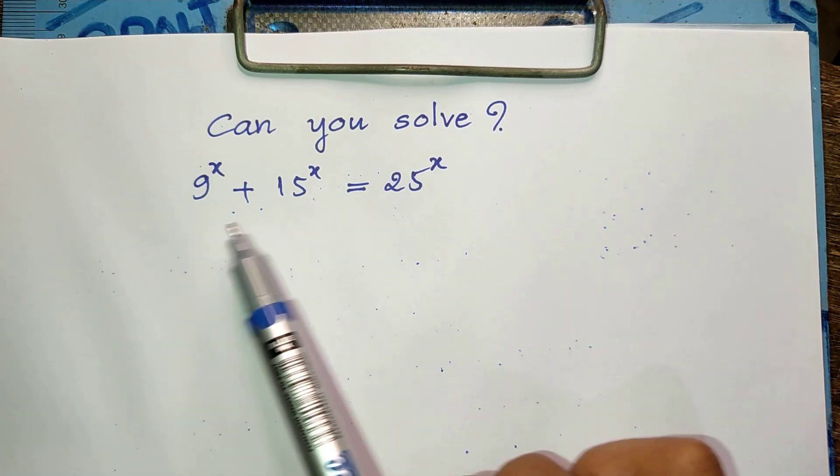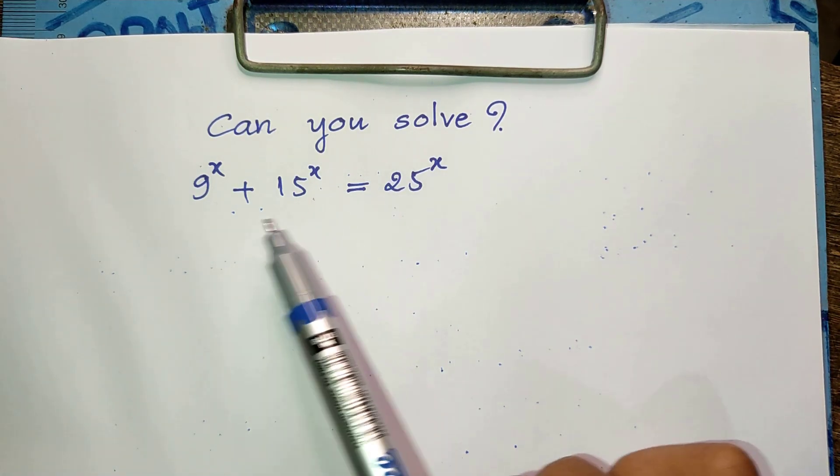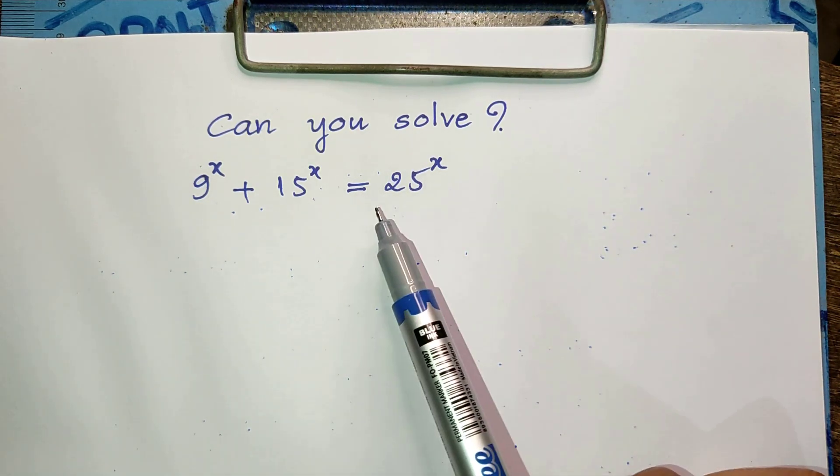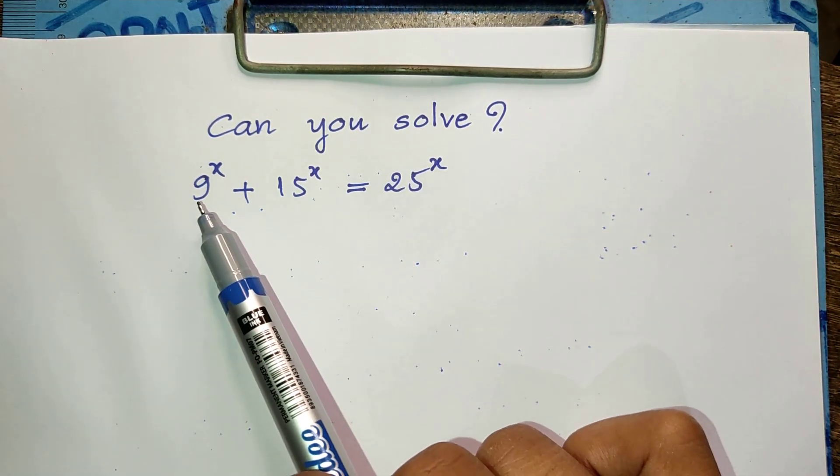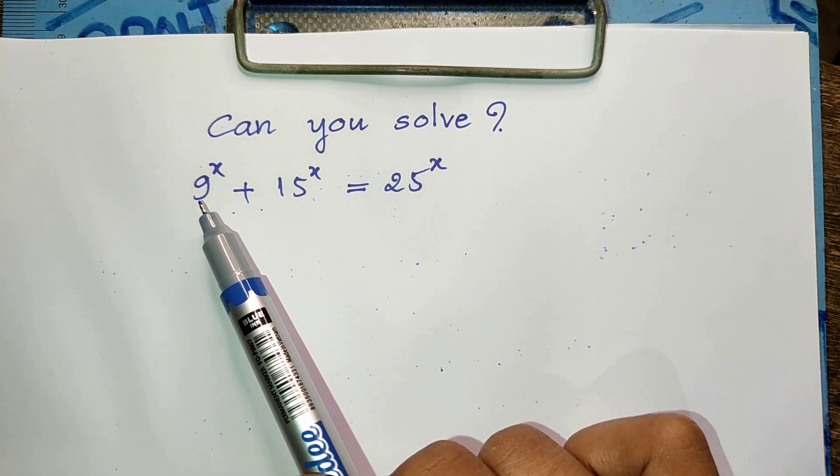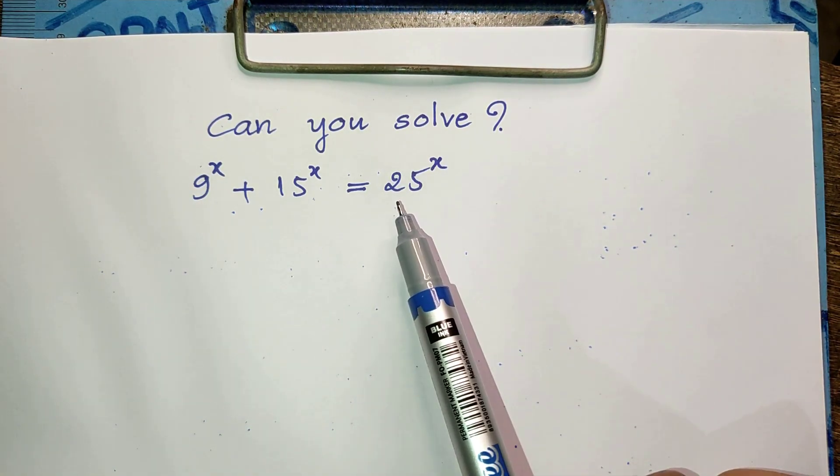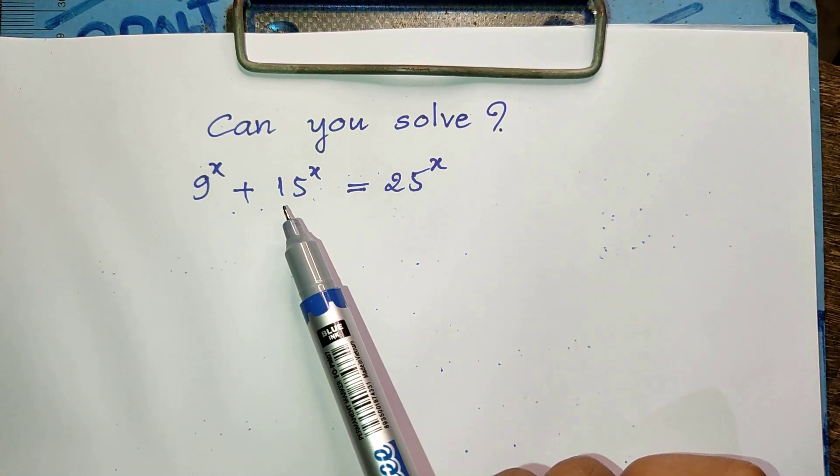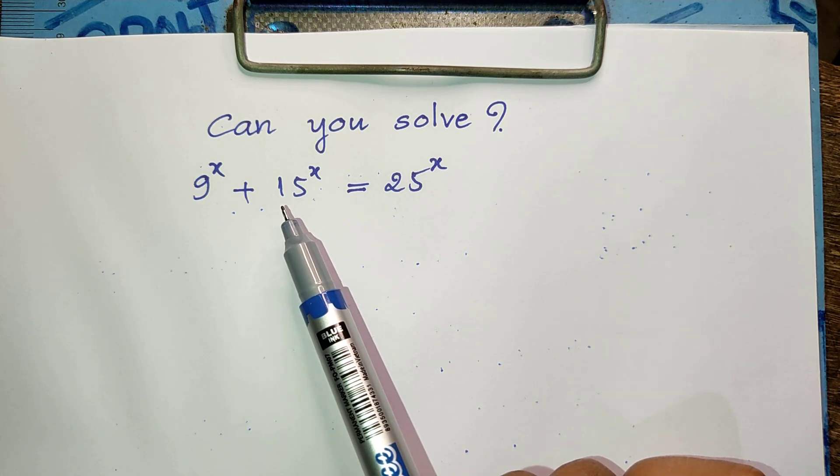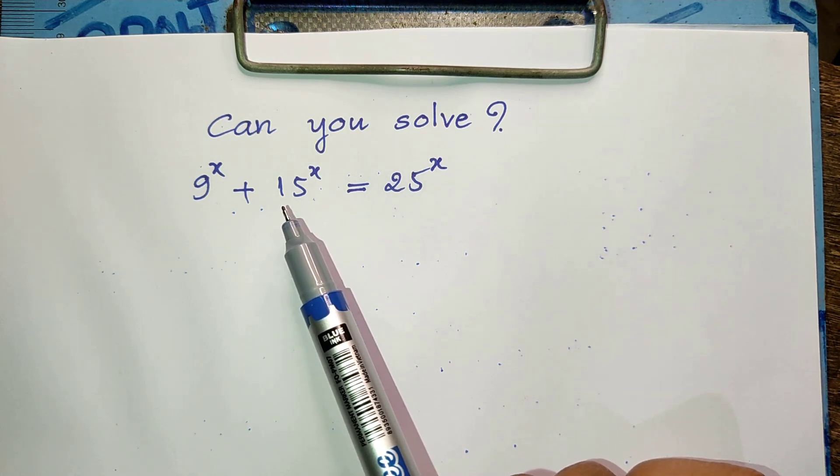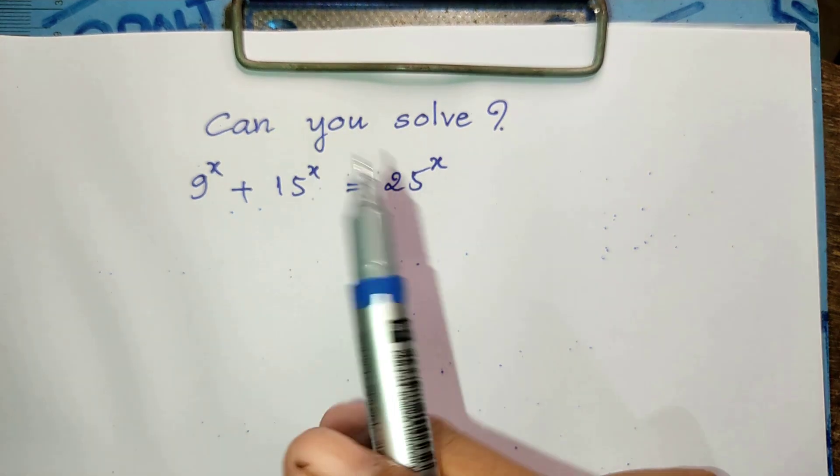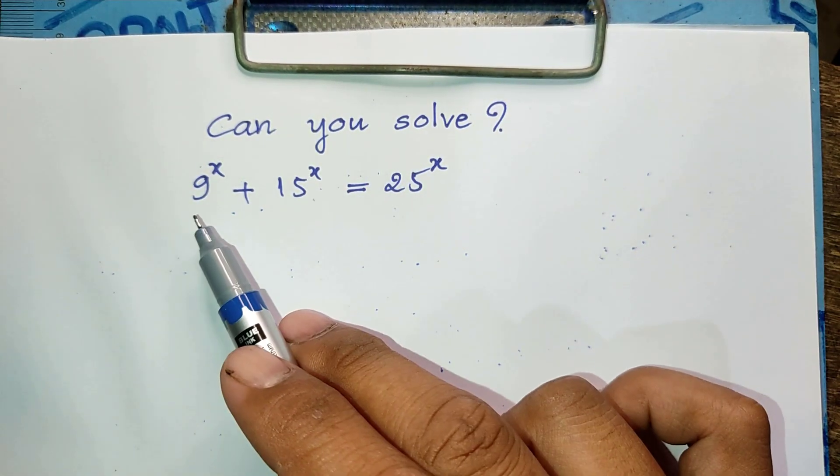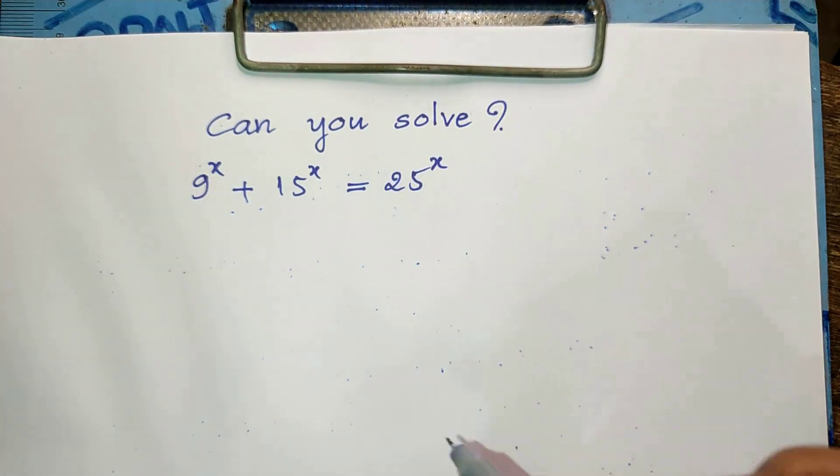We see this equation has an interesting relationship. This 9 and this 15 sum to 25. But we know that 9 we can write as 3 squared, and 25 can also be written as 5 squared, and 15 can also be written as 3 times 5. So for this question we must divide both sides of this equation by 9 or 25.